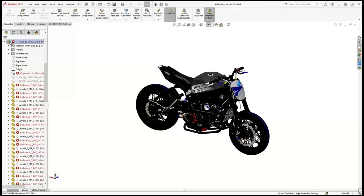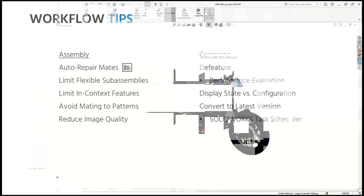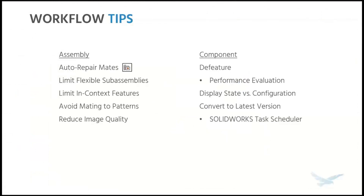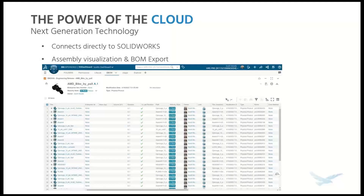We would have visibility of that error, and that's where the auto repair mates tool can help you. This is new to 2023 — so if you have a list of broken mates in your main assembly, you can right-click on the mates folder and hit this button.